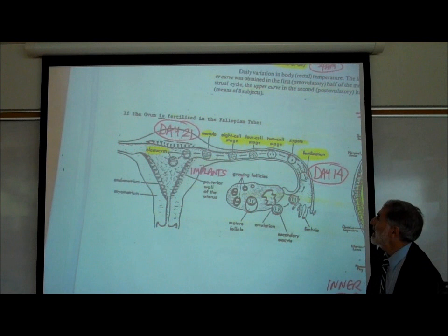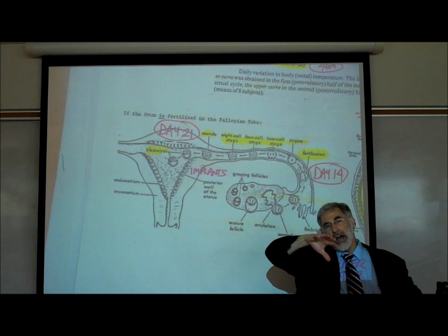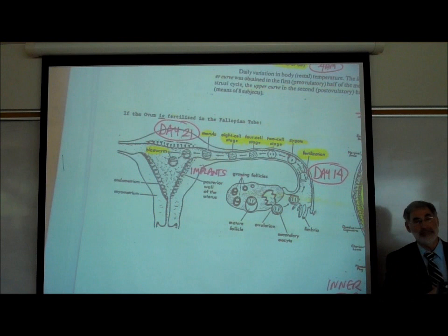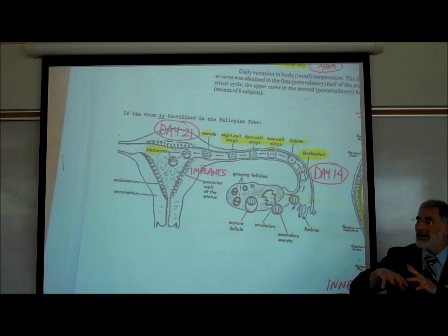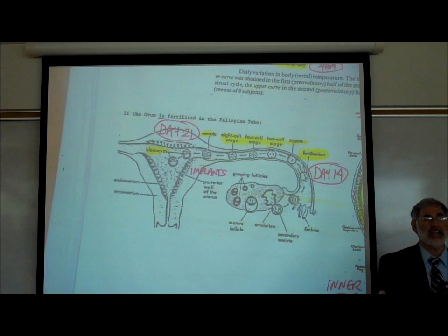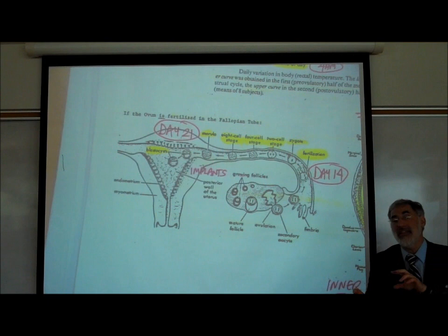The embryo cannot move on its own — it's pushed by ciliated cells on the inside lining of the fallopian tube. It takes about one week for the embryo to be pushed and reach the womb. If fertilization occurs around day 14 to 16, implantation occurs around seven days later — approximately day 21 of the woman's cycle.